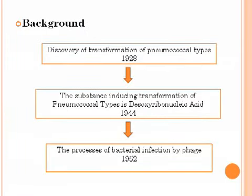Let's look at the background. There are three very important milestones during the process of DNA research. The first is Griffith's discovery of transformation of new molecular types in 1928. The second is in 1944, when Avery and his colleagues demonstrated that the substance responsible for transformation of new molecular types is DNA. Until 1952, the process of bacterial infection by phage was elucidated and we knew that DNA is the real hereditary material.